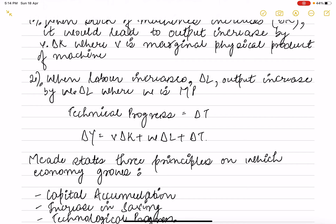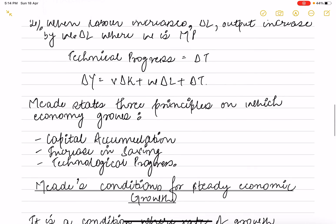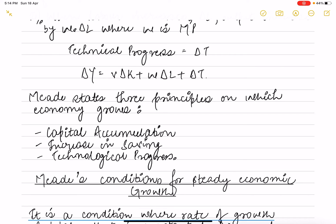Change in output is basically a summation of V change in K plus W change in L plus change in T, which is the technological progress. Meade states that three principles on which the economy grows: capital accumulation, increase in savings, and technological progress.